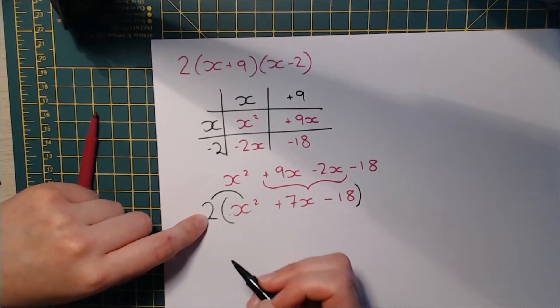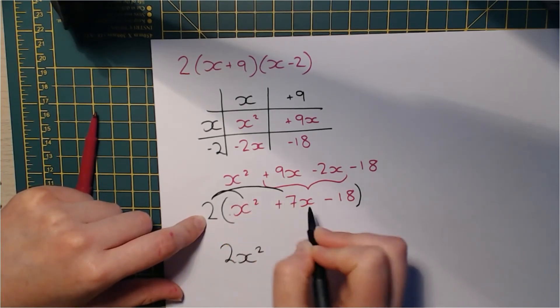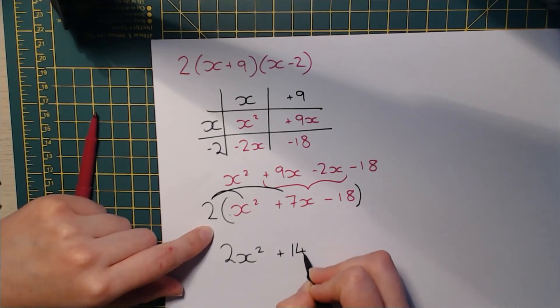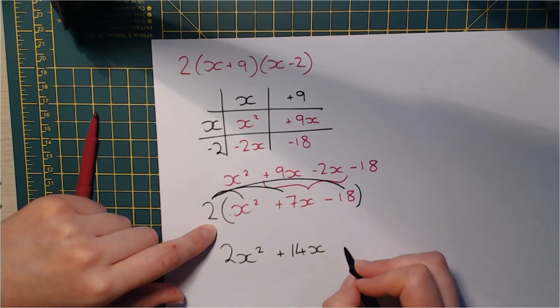So we're going back to what we did for the single brackets. We're going to do 2 multiplied by x squared, 2x squared, 2 multiplied by 7x, positive 7x there. That's 14x. And all the way on to the last one over there, 2 multiplied by negative 18, which is negative 36.